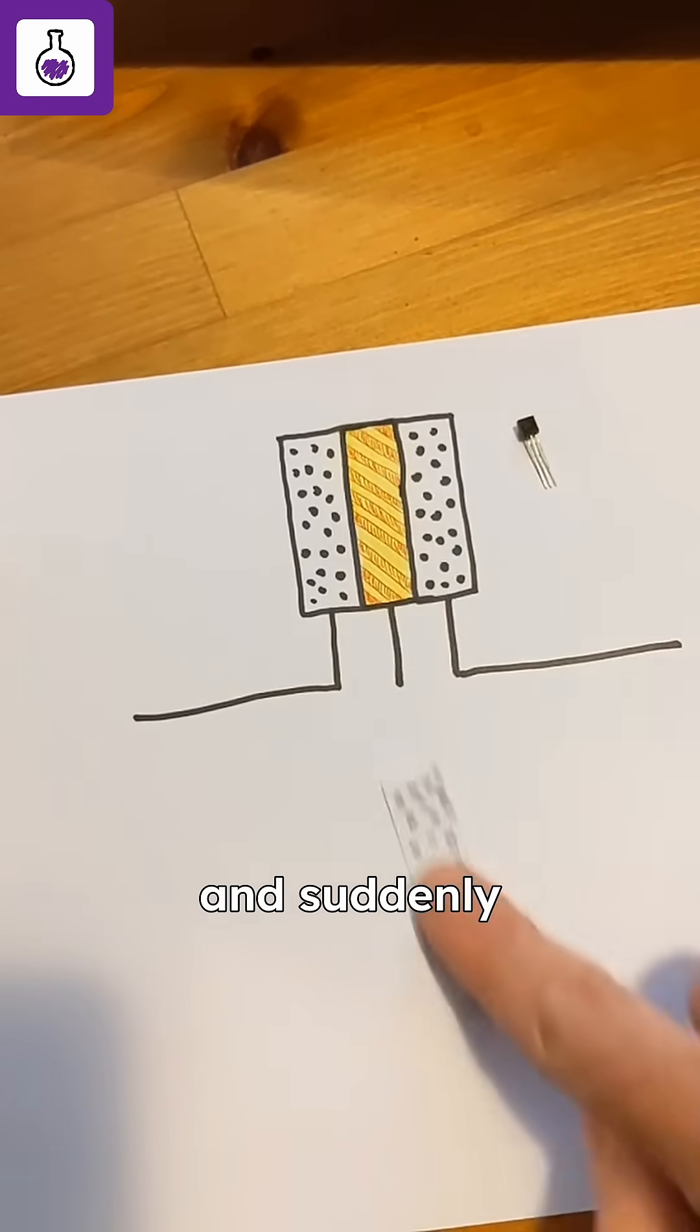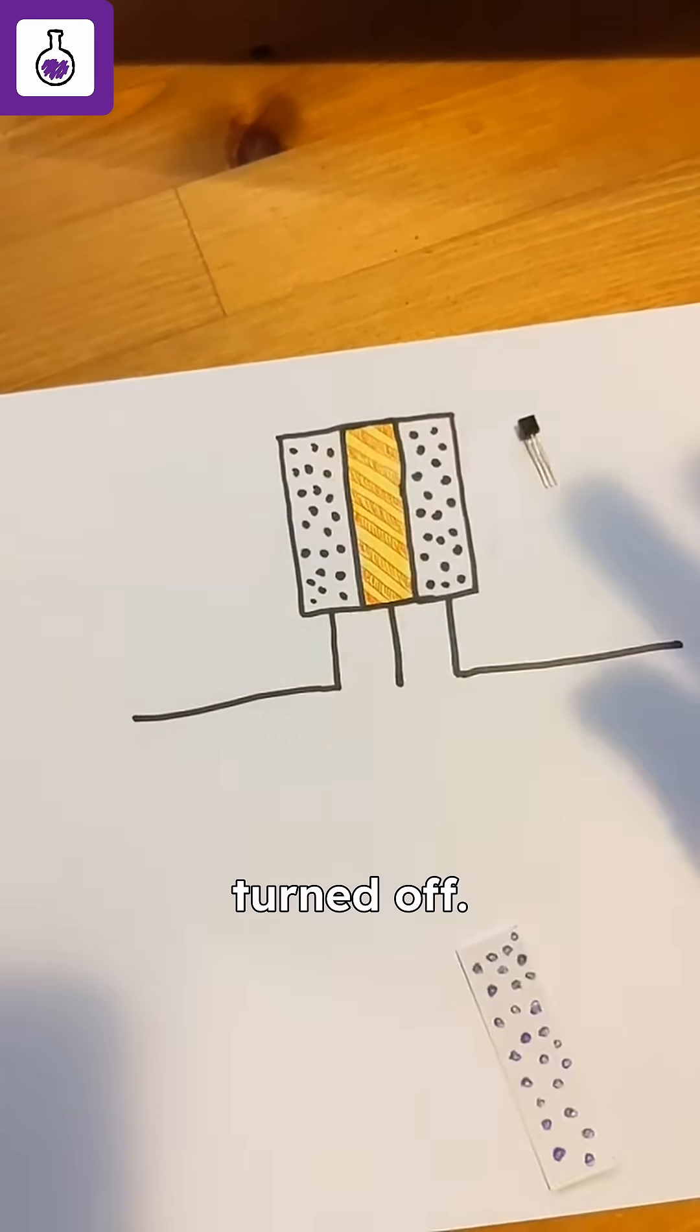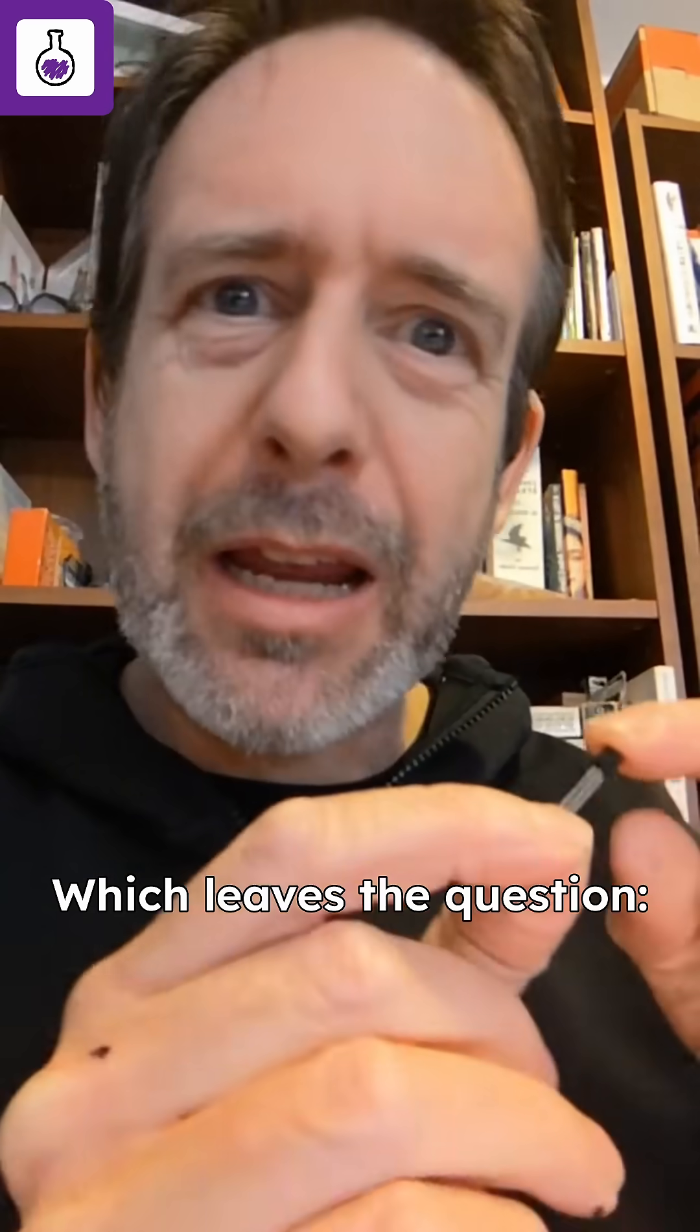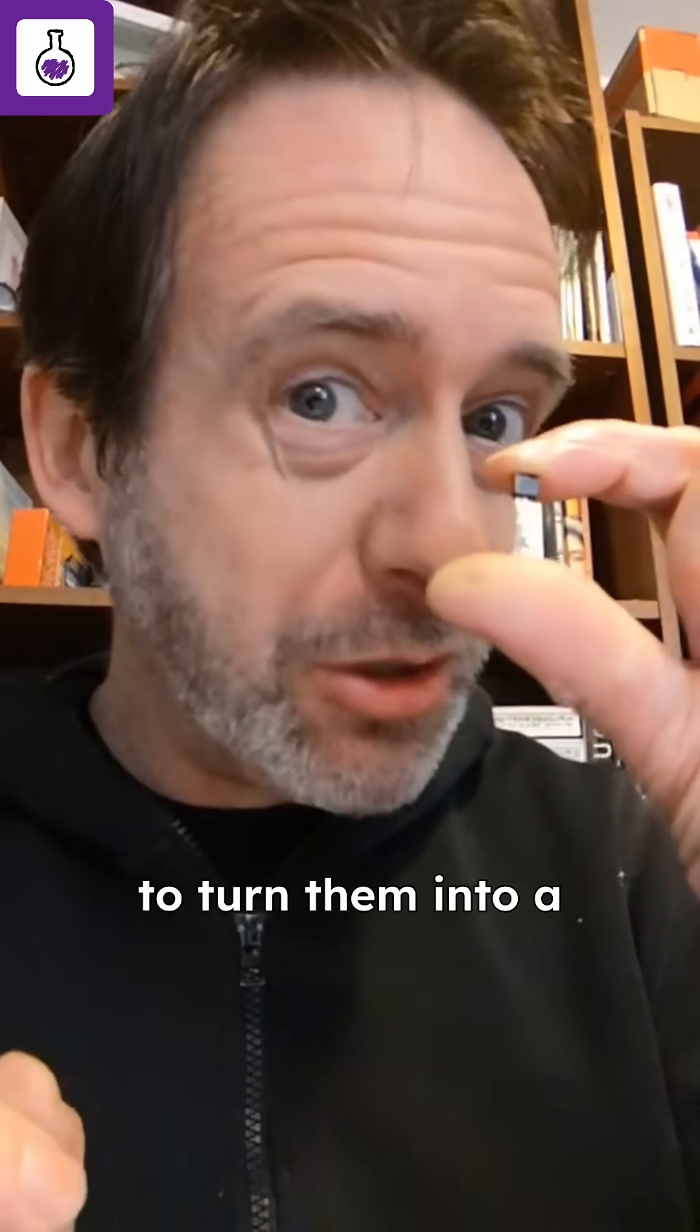Take that current away, and suddenly the electricity flow gets turned off, which leaves the question, how do we hook up these to turn them into a NAND gate?